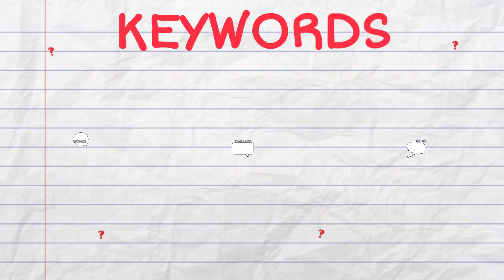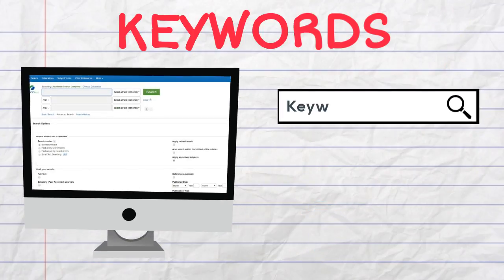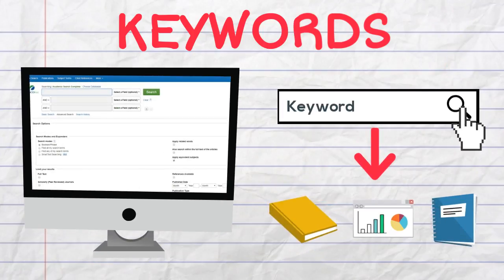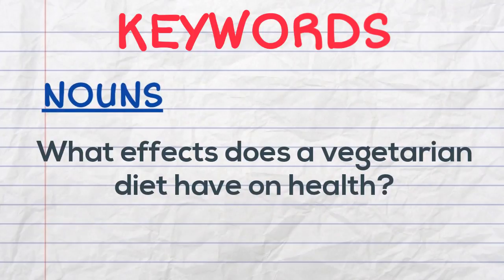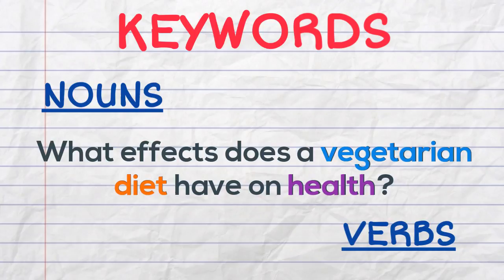Keywords are used in database searches and can have a big impact on the results. Look for the nouns and verbs in your research question that have the most significance and represent the main ideas of your topic.